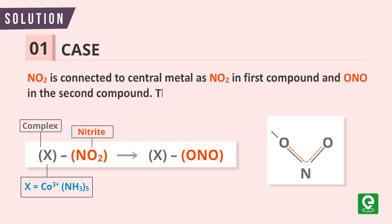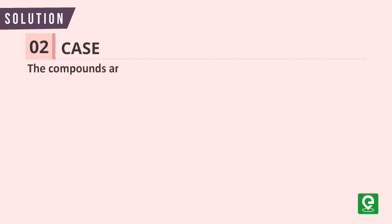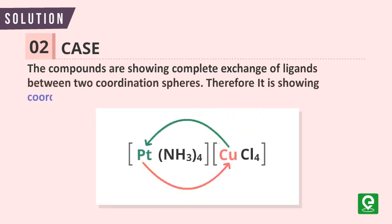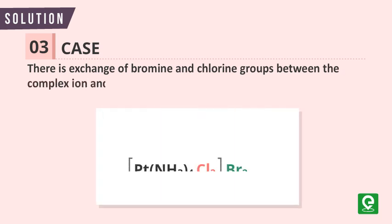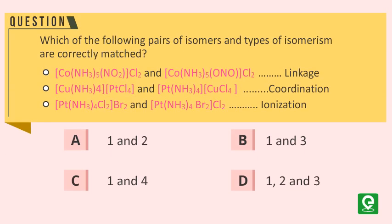In the first case, NO₂ is connected to the central metal as NO₂ in the first compound and ONO in the second compound, therefore it is showing linkage isomerism. In the second case, the compounds show complete exchange of ligands between two coordination spheres, therefore it is showing coordination isomerism. In the third case, there is exchange of bromine and chlorine groups between the complex ion and the ions outside it, therefore it is showing ionization isomerism. So all three cases are correct, hence the correct option is D.